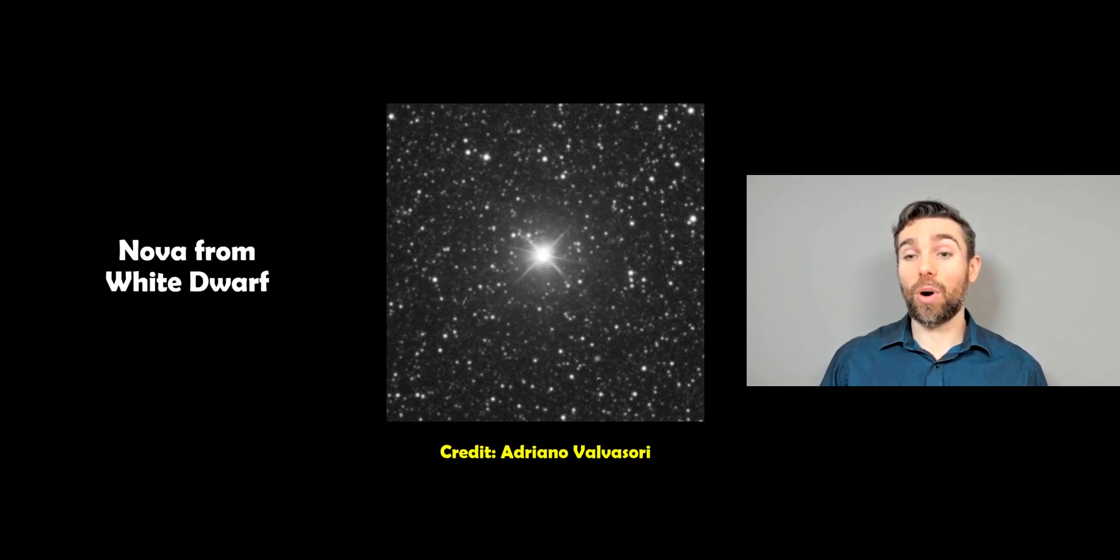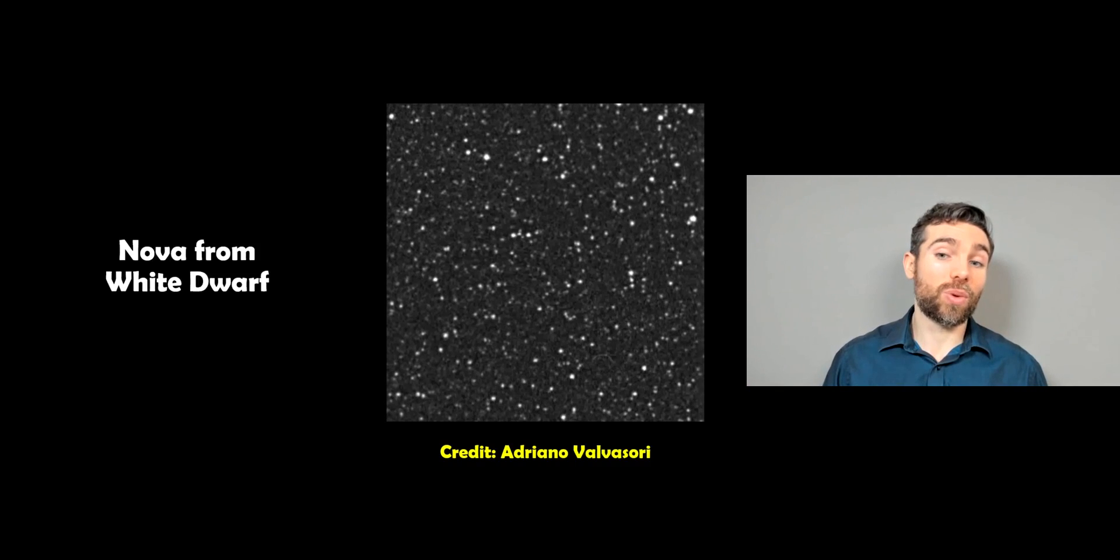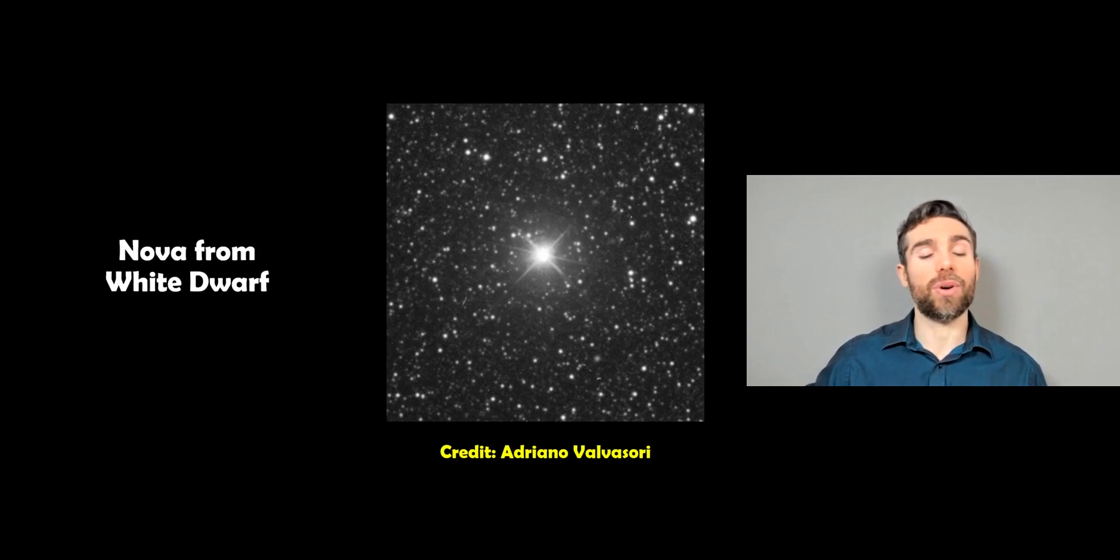So here you've got an example of a nova, a smaller version, really, from a white dwarf. So this potentially could be a type 1a at some point in the future, but it is at the moment just a nova. And again, they are very energetic, they're very bright, they're just not on the same level as what a supernova might be.